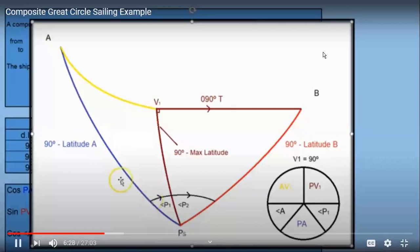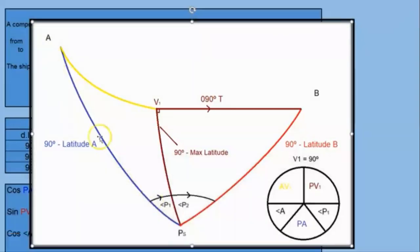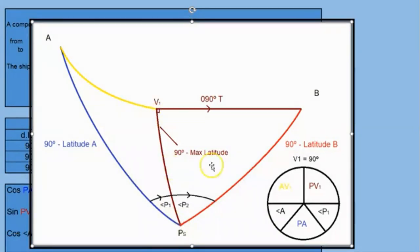First, let's see what parts of the triangle we know. We know the latitude of A — subtracting 90 minus latitude gives us AP. Same way we can find PB. We have the vertex latitude, so we can find PV also. Vertex latitude is given, B latitude is given, A latitude is given. A and B longitudes are given, but we don't know the longitude of V — that's what we have to calculate.